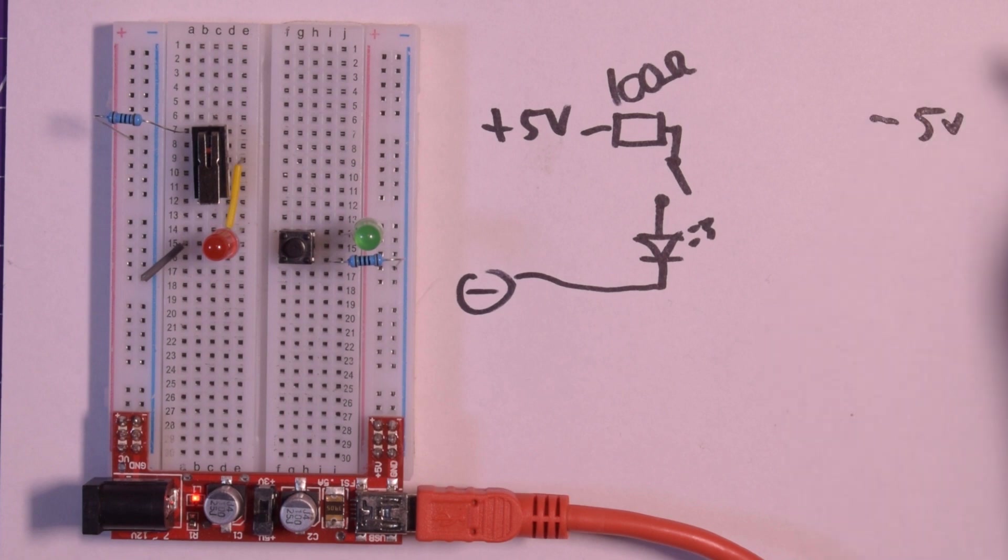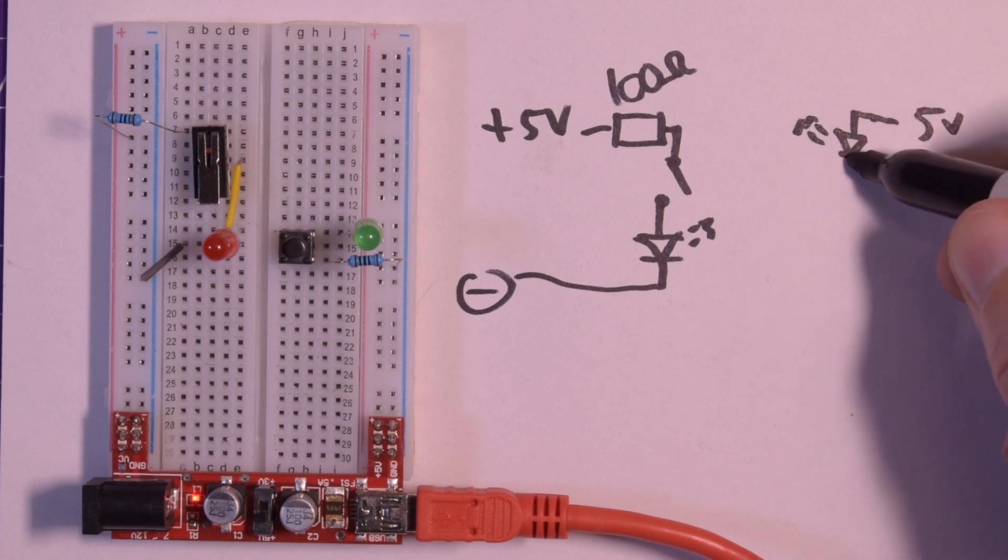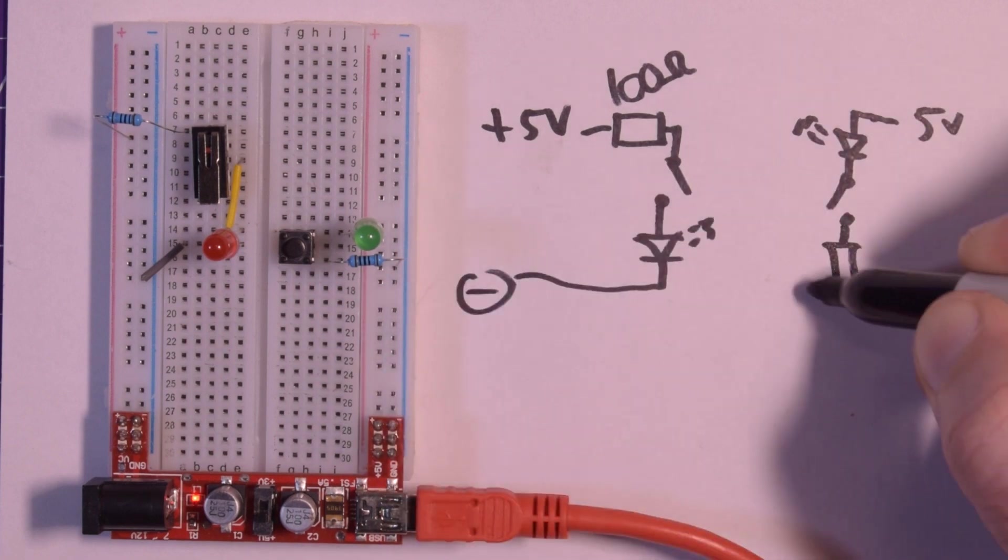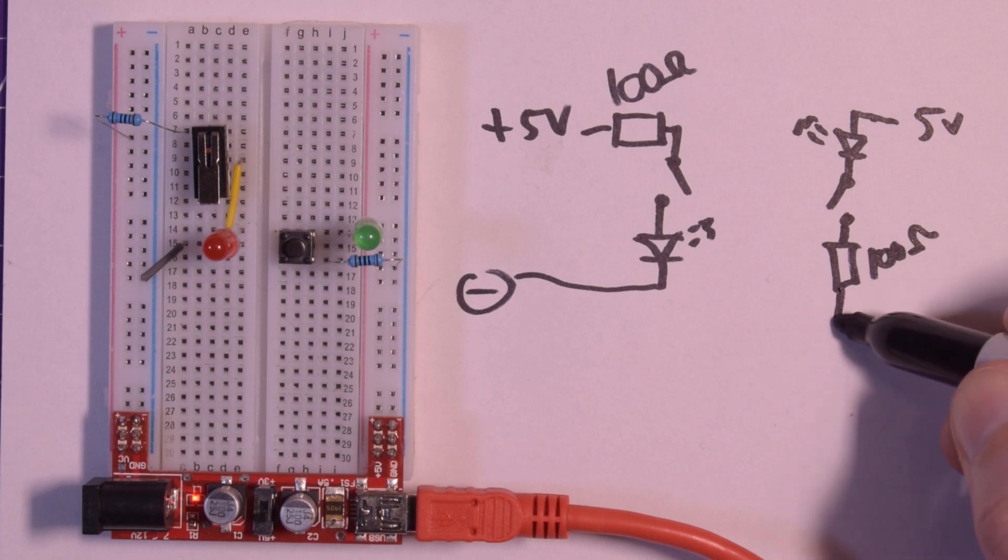So I've got 5 volts here through a 100 ohm resistor, through a switch, through the red LED to ground. On the other side however, I only have my 5 volts which is about here. I have an LED, and I have a switch, and I have a resistor.